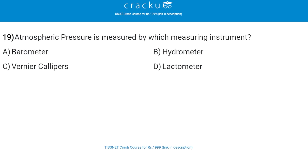Next: atmospheric pressure is measured by which instrument? The correct answer is barometer, that is option A. A barometer is a scientific instrument used to measure atmospheric pressure, also called barometric pressure.